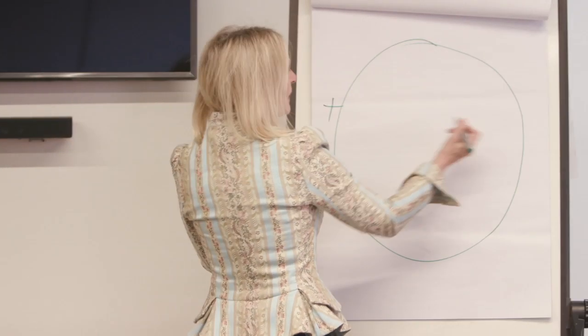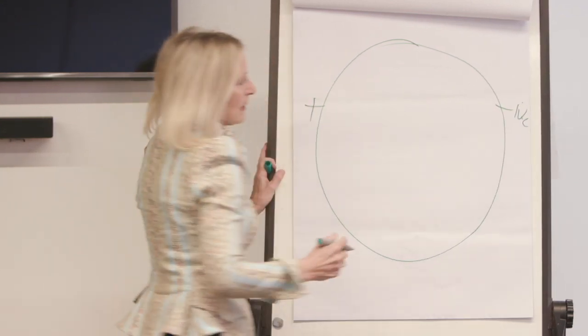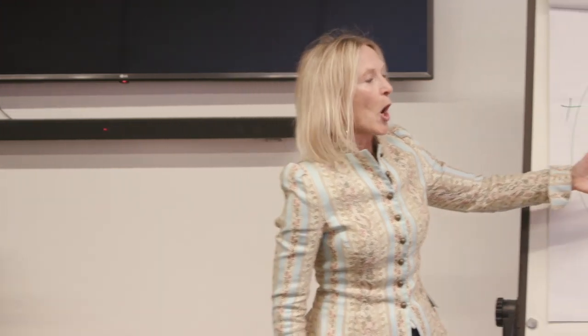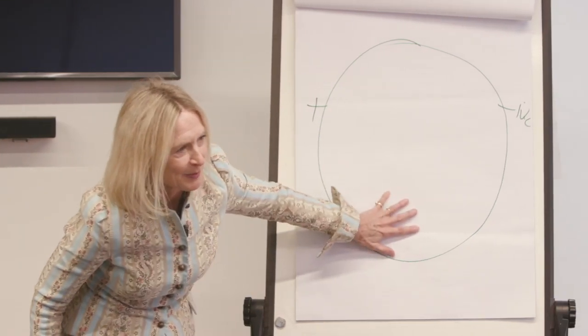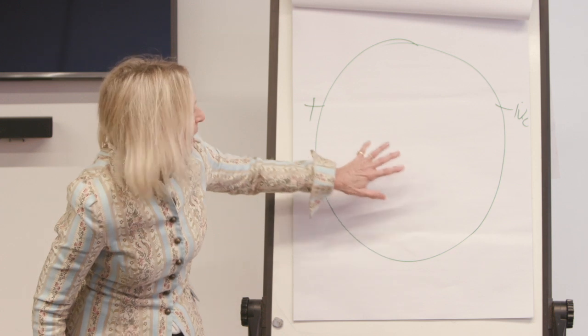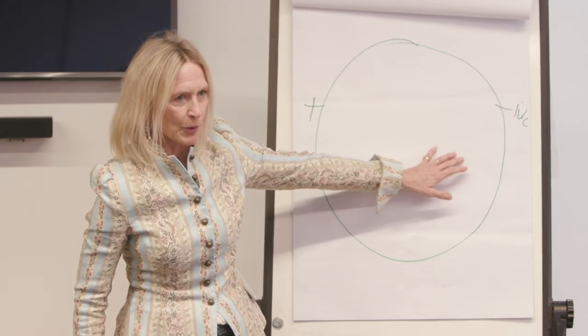It has a positive and a negative charge. It has to have a positive and negative charge, because if it doesn't, what happens? It collapses or blows apart. So to hold the shape of any system, you have to have a positive and negative charge. You've got to have unity as plural — at minimum two.